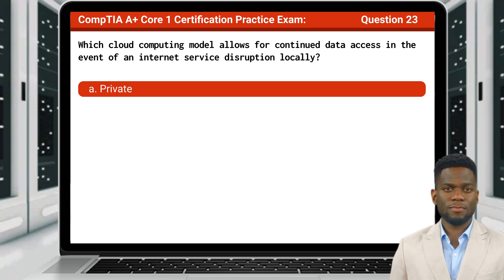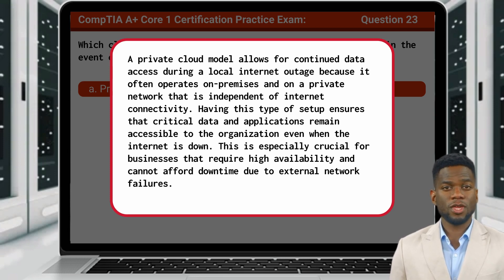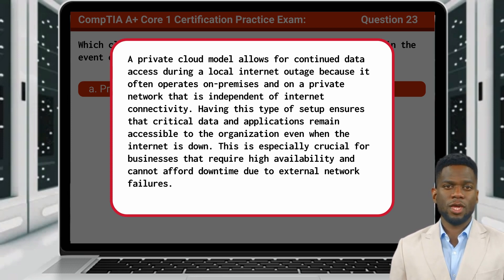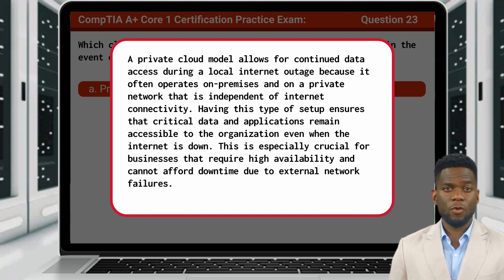The answer is A: Private. A private cloud model allows for continued data access during a local internet outage because it often operates on-premises and on a private network that is independent of internet connectivity. Having this type of setup ensures that critical data and applications remain accessible to the organization, even when the internet is down. This is especially crucial for businesses that require high availability and cannot afford downtime due to external network failures.